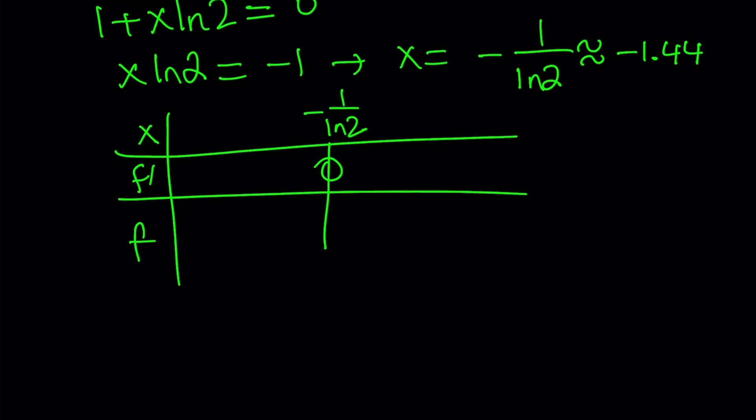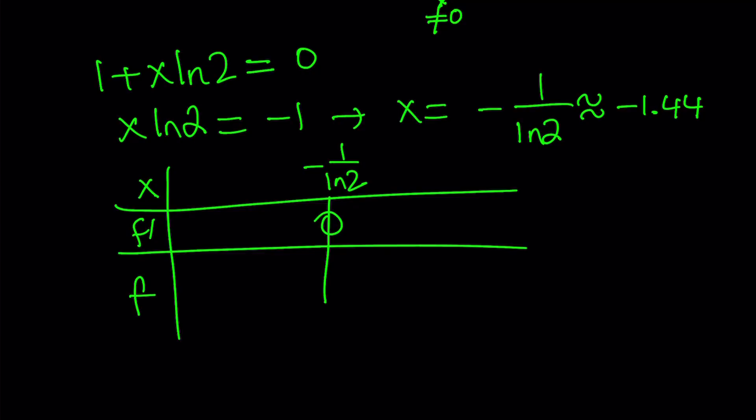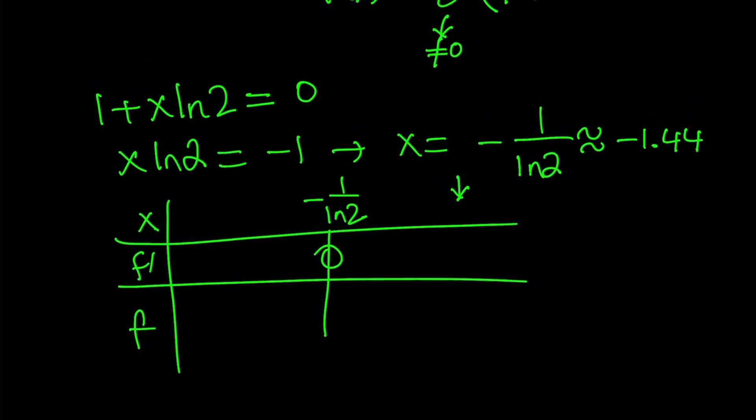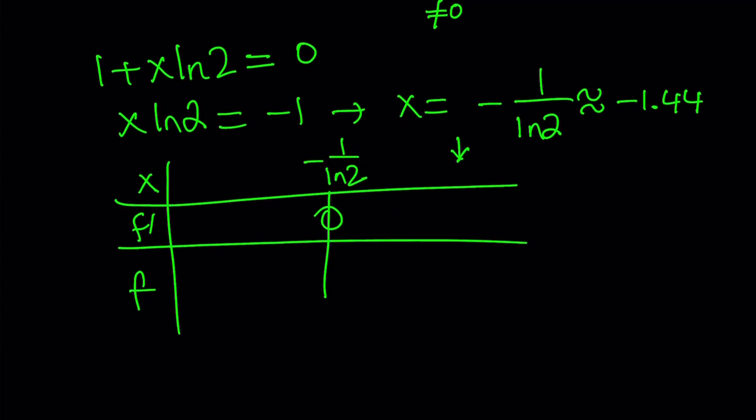And notice that our derivative, if x is greater than -1/ln(2), the first derivative is going to be positive. You can basically pick any number to the right of -1/ln(2), like 0 or 1, and replace x with that, and you're going to notice that f' is positive on that interval. Just the test value is good enough. So here it's positive.